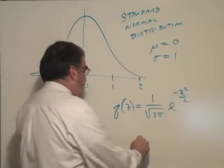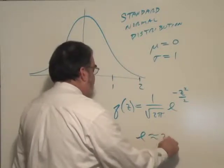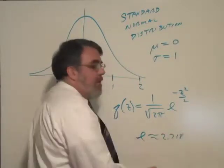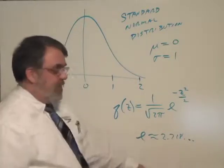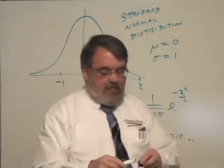And it turns out e is called the natural base. It's a naturally occurring number. It's approximately 2.718, but it goes on forever. It's without a pattern. It's an irrational number.